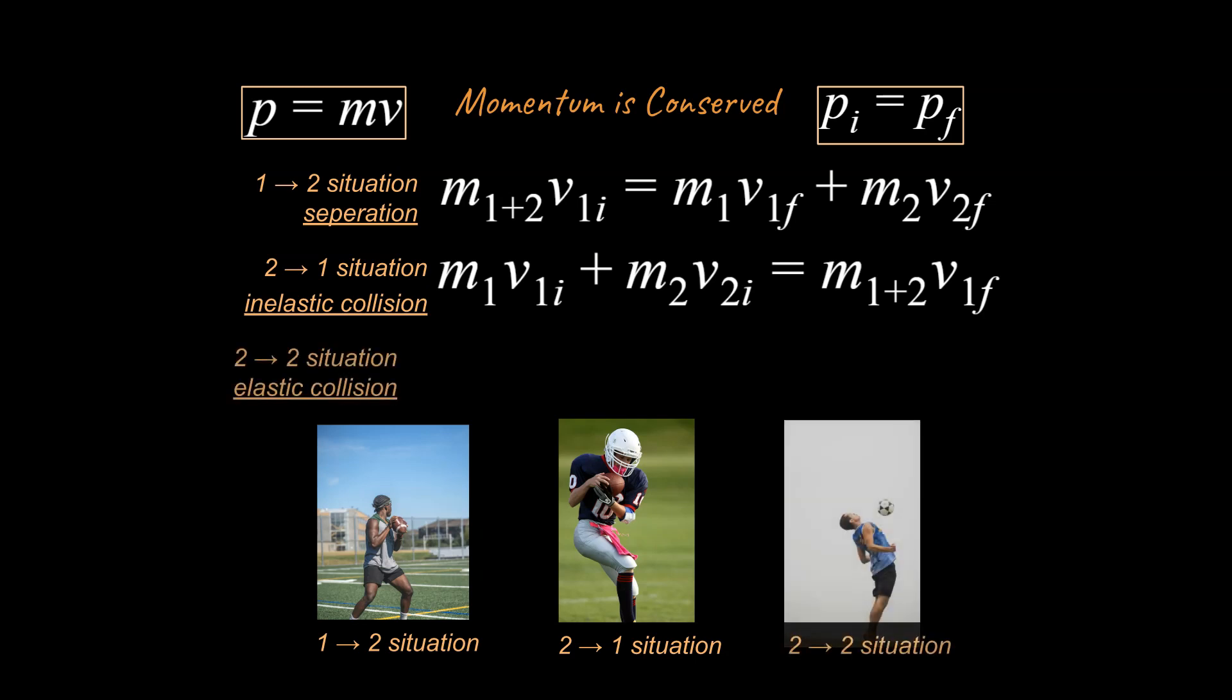Let's take a look at our last scenario. We said this was a two-to-two situation, also called an elastic collision. This helps us understand we're going to have two objects as well as two terms before the event, to the left of the equal sign, and two objects or two mathematical terms on the right side of the equation after the event.